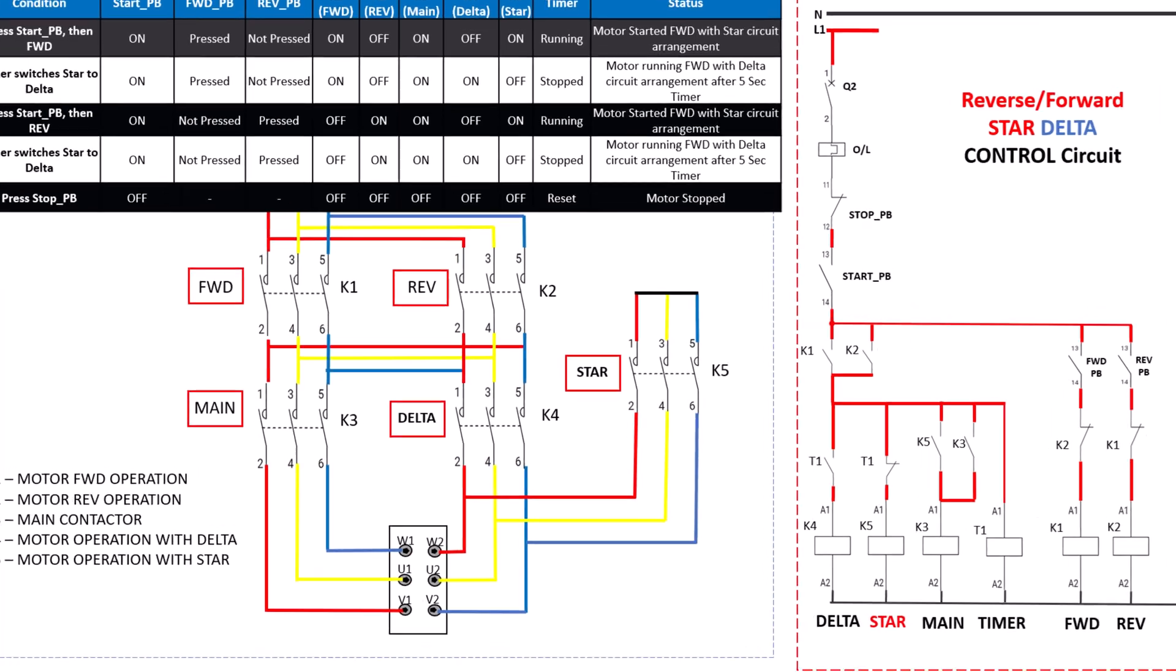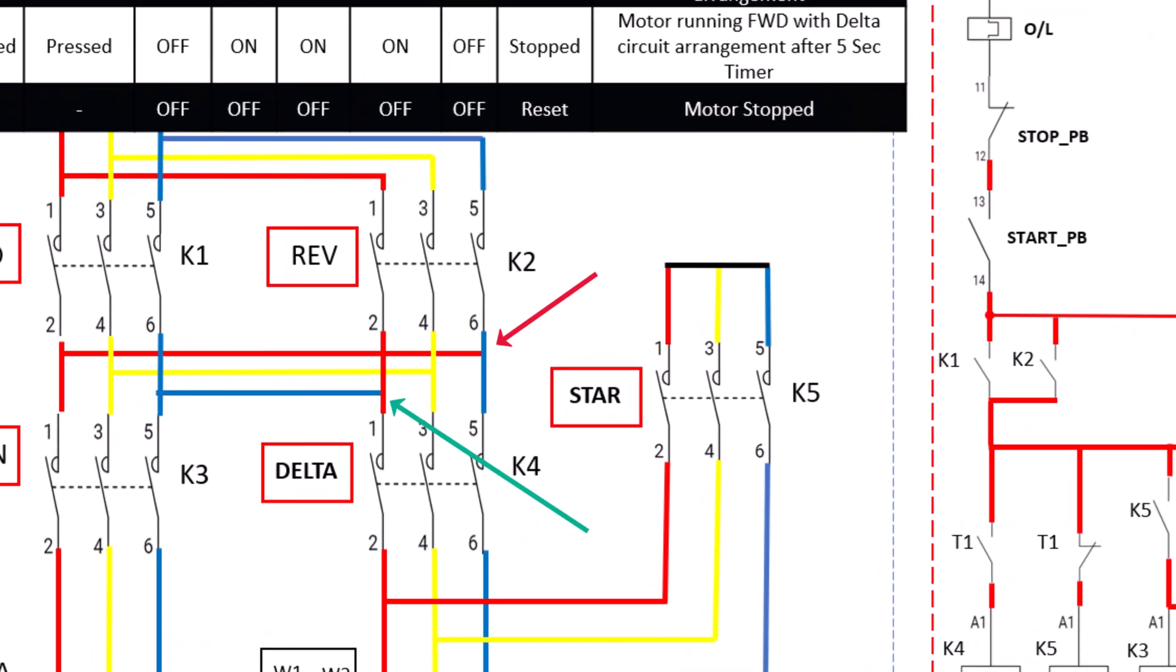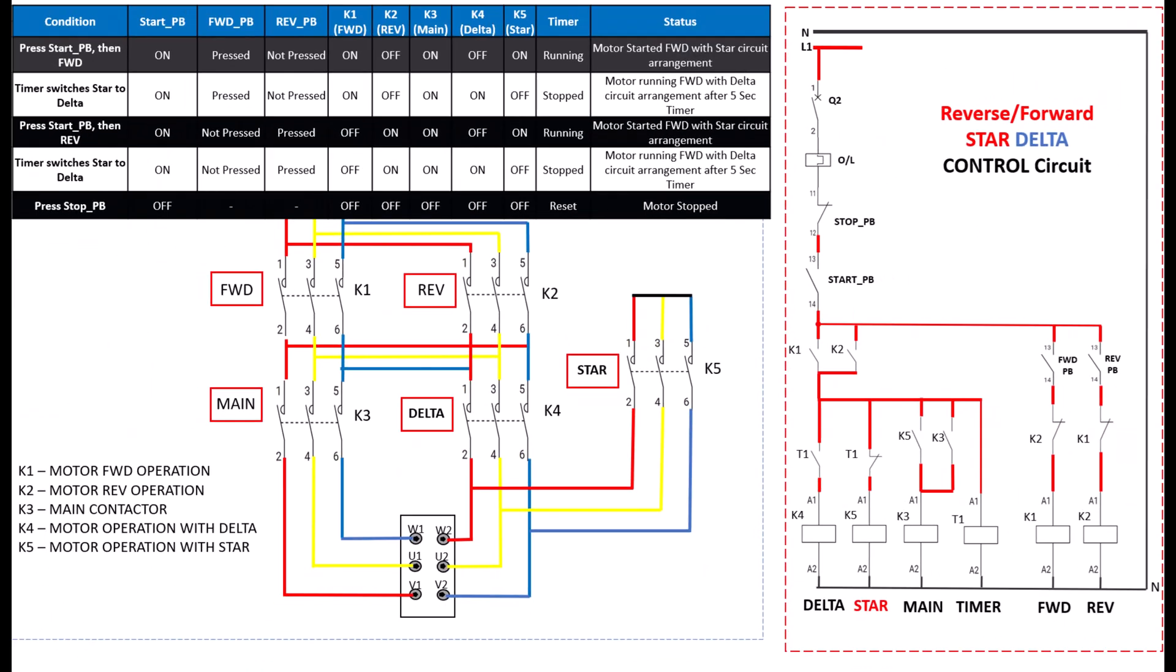To reverse the motor's rotation, we have to swap two phases, such as the red and blue phases, which alters the direction of the rotating magnetic field and changes the motor's direction. So, don't get confused about how the motor will start in reverse direction with K2 reverse contactor. It is because when you swap any two phases, the motor direction changes as the direction of the rotating magnetic field changes.